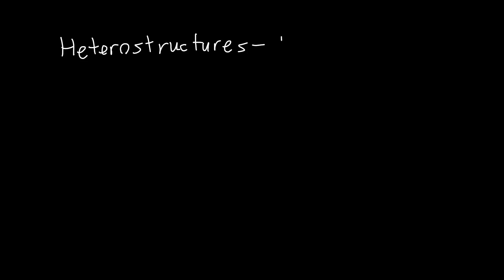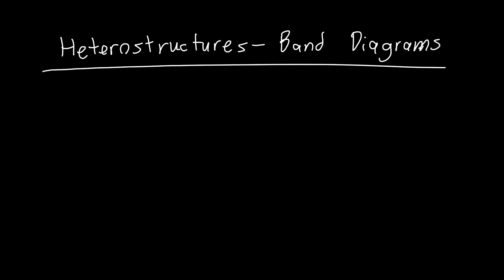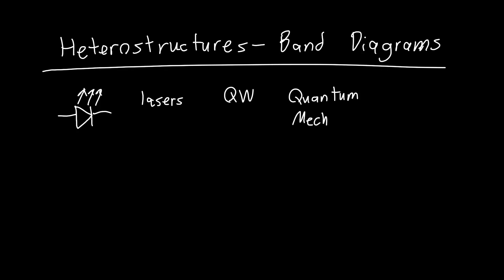In this video we're going to be talking about heterostructure devices and specifically how to draw their band diagrams. Heterostructures are used to make everything from LEDs; they're absolutely essential in things like lasers or any devices relying on quantum wells. They also let us make direct tests of quantum mechanics and let us test things that would be incredibly difficult to test any other way. They're ubiquitous in any optoelectronic device.